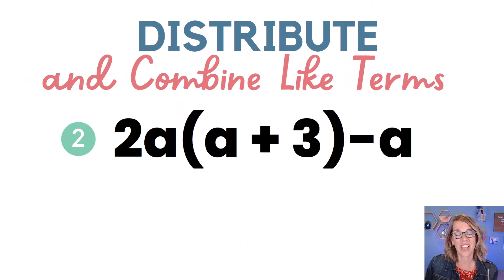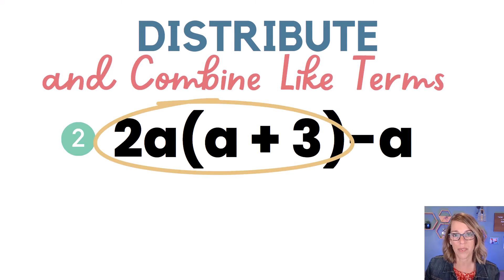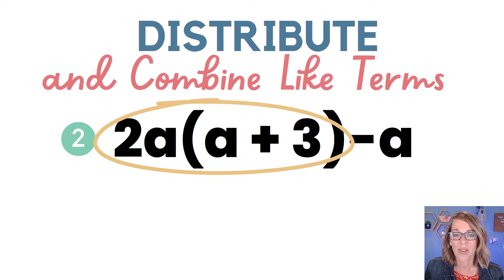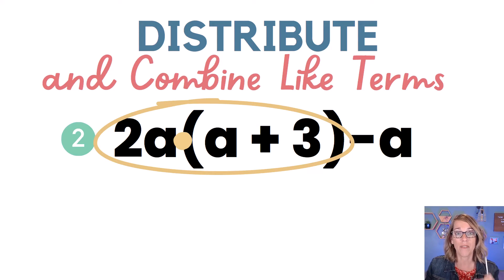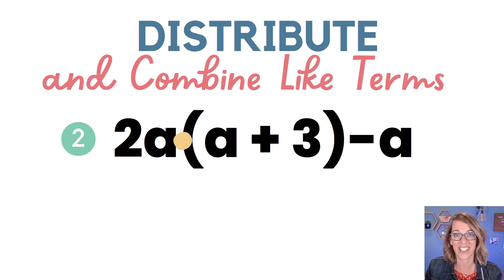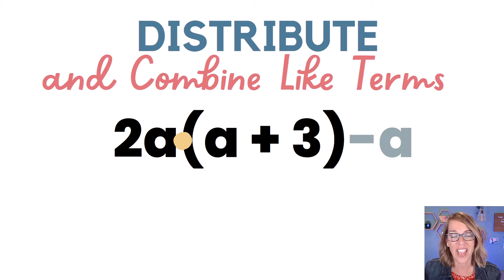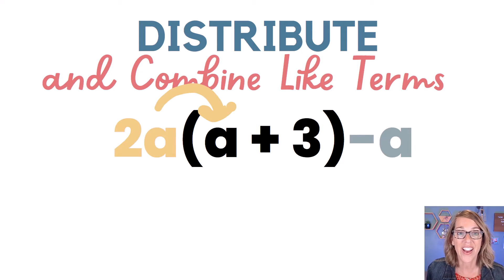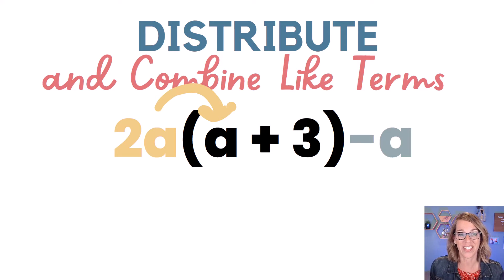In this next one, I want to both distribute because I've got the group with the parentheses, and I'm going to combine some like terms because I've got the negative a on the outside. I want to focus on just the distribution part first where I've got that two a times the parentheses. So let's go ahead and leave that negative a off to the side and take that two a on the outside and multiply it inside those parentheses.